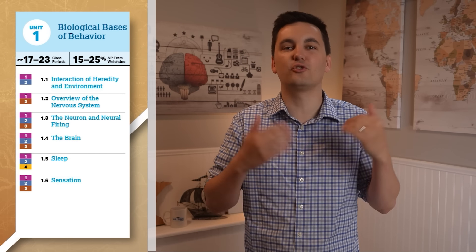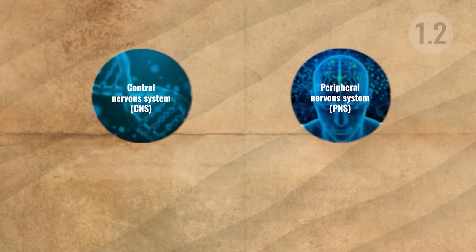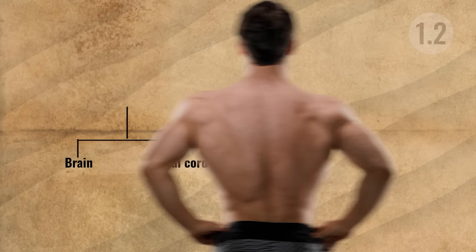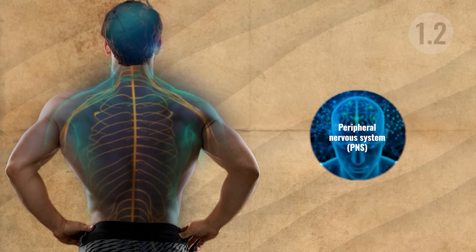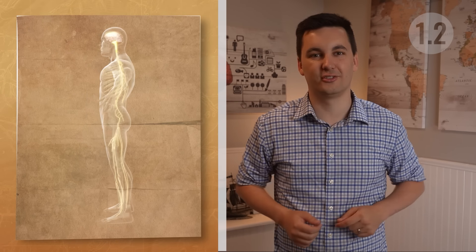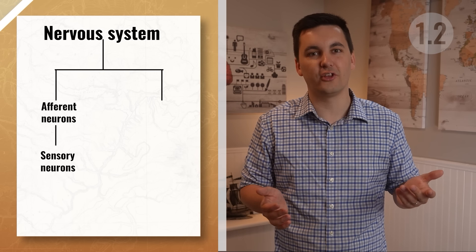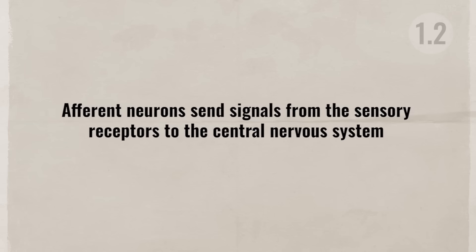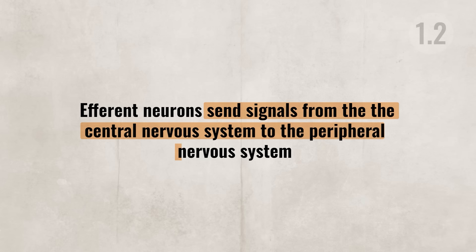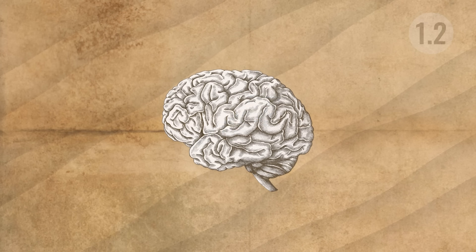The next part of this unit dives into the nervous system. We need to differentiate between the central nervous system (CNS), made up of the brain and spinal cord, and the peripheral nervous system (PNS), which consists of nerves that branch off from the brain and spine and connects the CNS to all of the body's organs and muscles. The nervous system uses afferent neurons (sensory neurons) to send signals toward the CNS, and efferent neurons (motor neurons) to send signals from the CNS outward. Remember: afferent approaches the brain, efferent exits the brain.